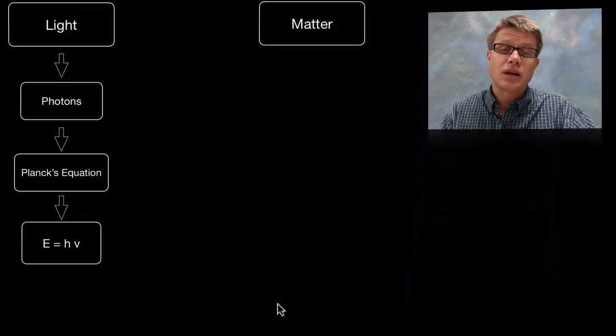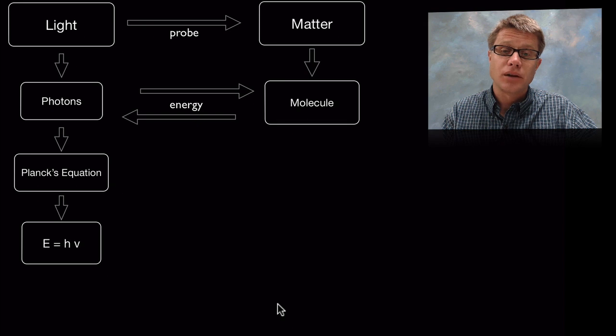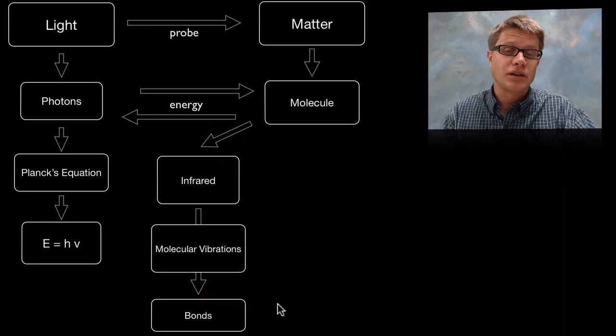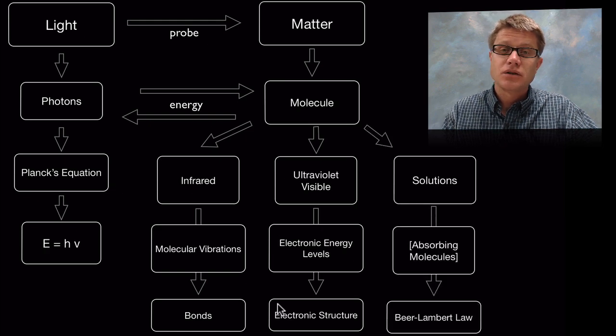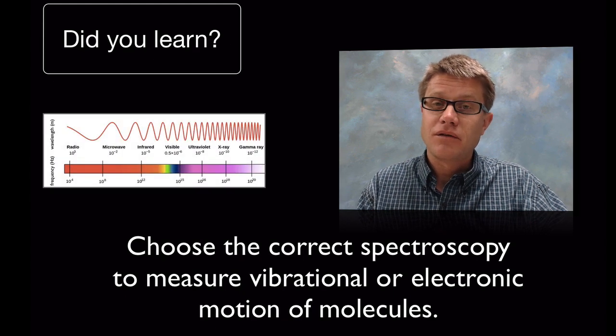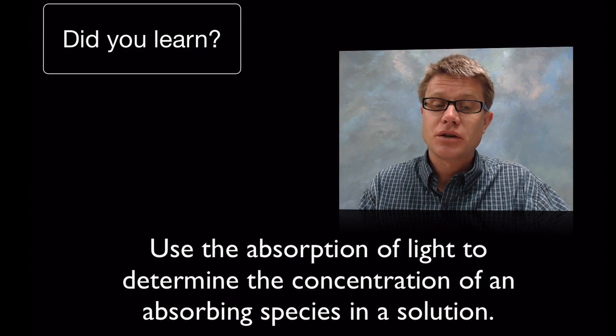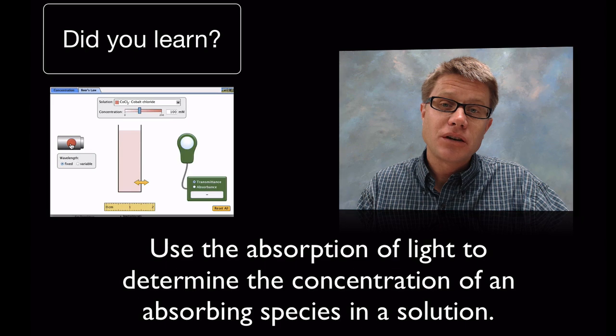What did we learn? Light travels in these little photons using Planck's equation, and we can quantify that. We can use it to probe matter because molecules are picking up or letting go of these photons. Remember the three major things: infrared light allows us to look at vibrations of molecules and tells us about their bonds; ultraviolet and visible light tell us about electronic structure and where the electrons are; and in solutions those absorbing materials will pick up some light, so we can use Beer-Lambert's law to make predictions on concentration based on absorbance level. You should have learned to choose the correct spectroscopy to measure vibrational or electronic motion of molecules, and use absorption of light to determine concentration of absorbing species in a solution. I hope that was helpful.